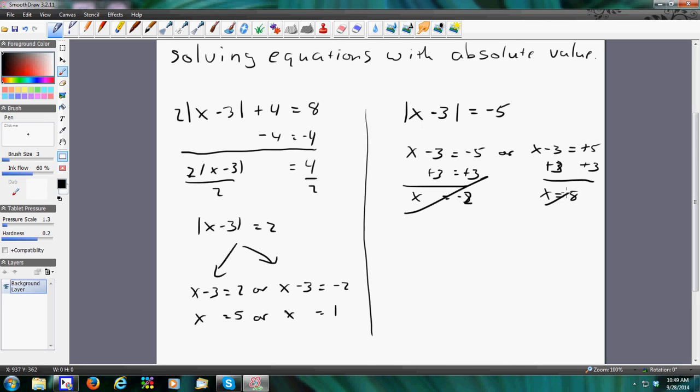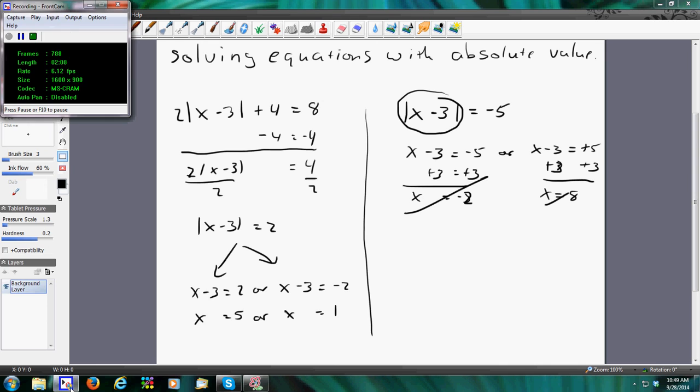And so the problem is, whenever you have the absolute value, if it's just the absolute value, it has to be equal to 0 or greater. You can never have a negative value. And that's it for absolute value.